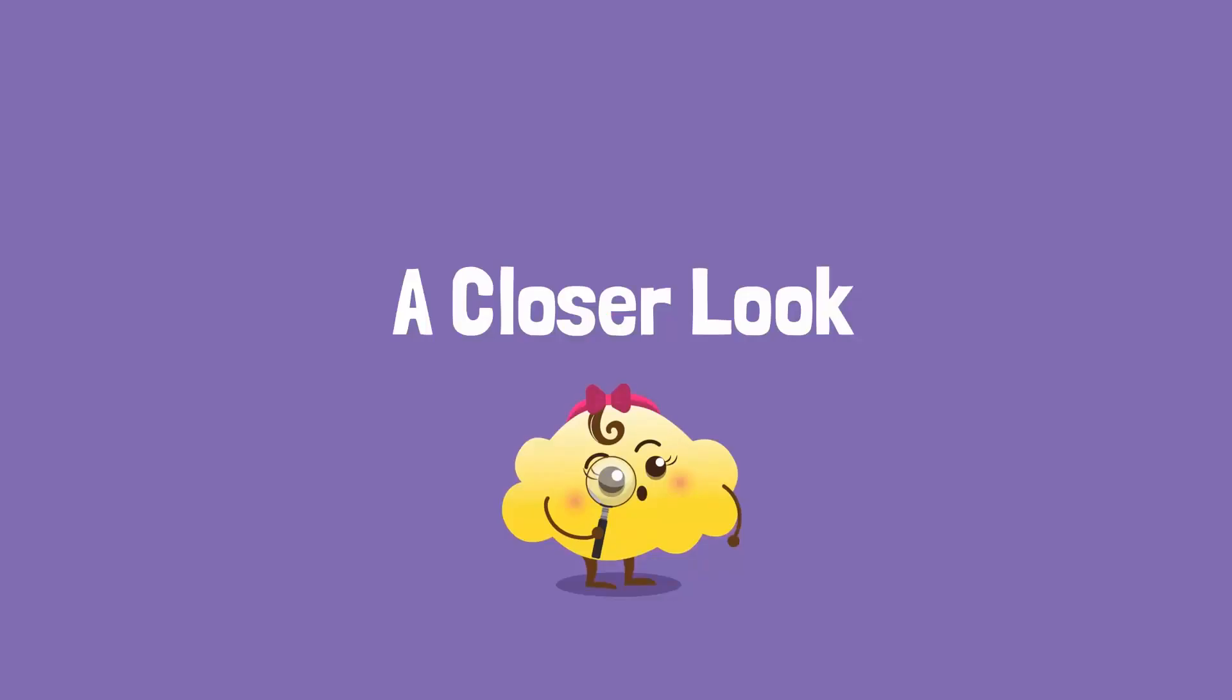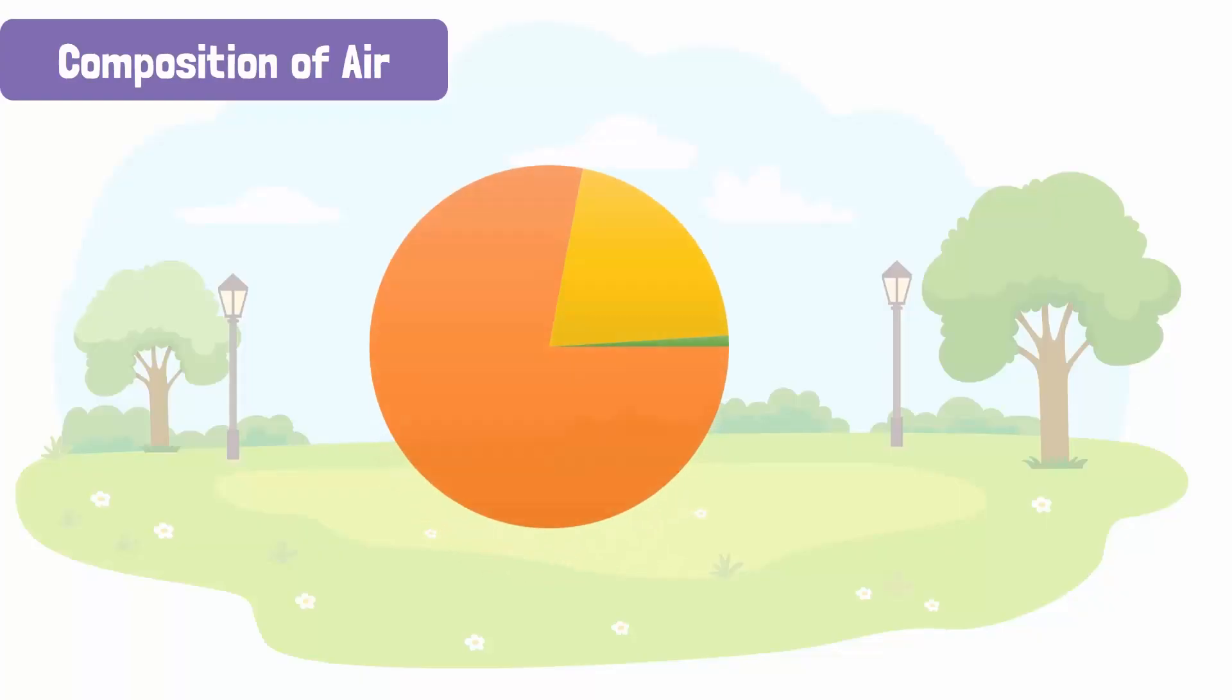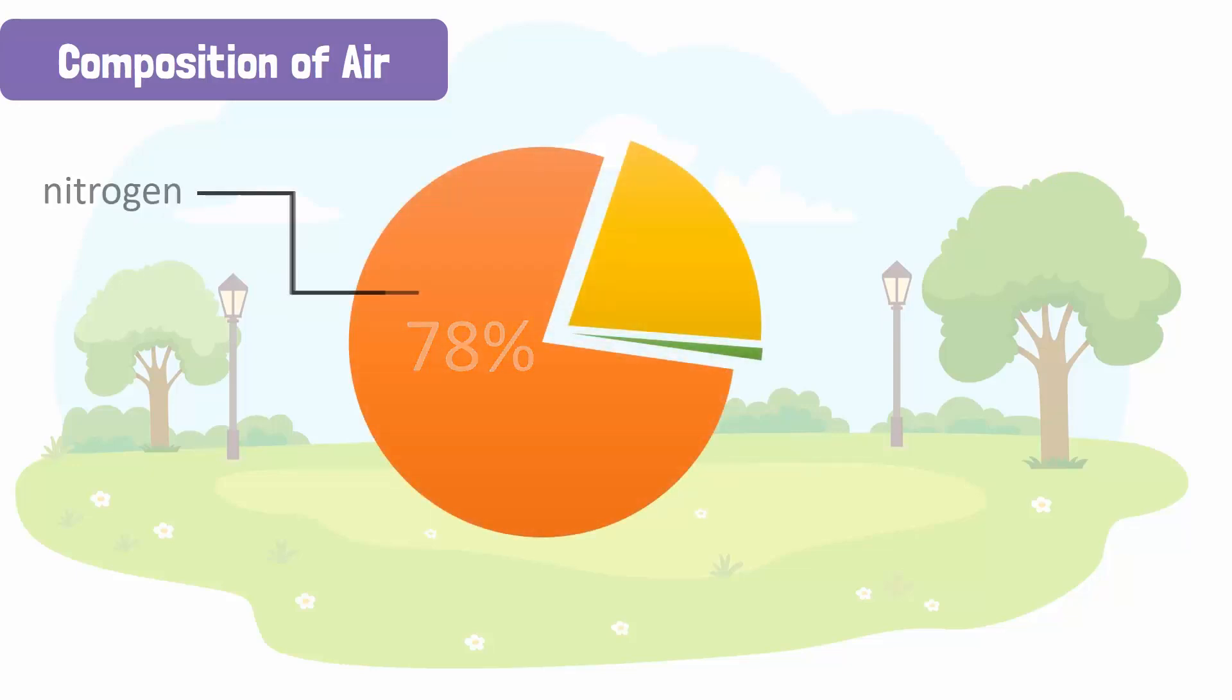Let's take a closer look and see what gases air is composed of. The biggest component of air is nitrogen, which makes up approximately 78% of air. Of the remaining 22%, 21% of air is composed of oxygen. Together, nitrogen and oxygen gases form 99% of air.